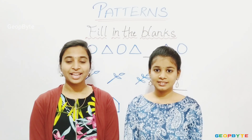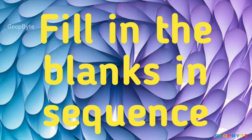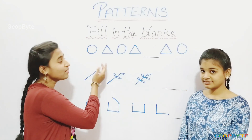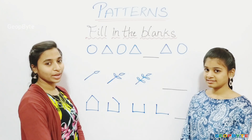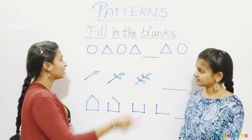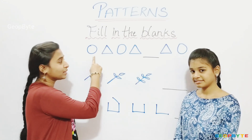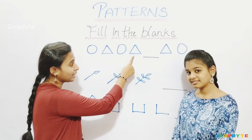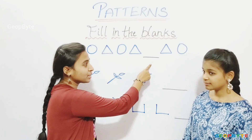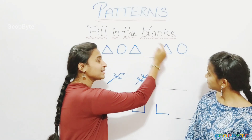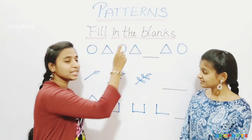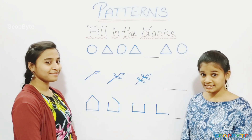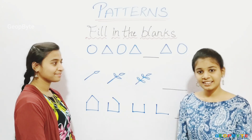Fill in the blanks. See here — we have few shapes in a sequence. A circle, triangle, circle, triangle, dash, triangle, and circle. What comes in the blank? Yes, correct answer — it is circle.